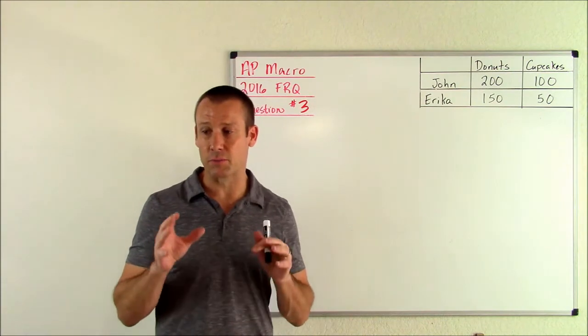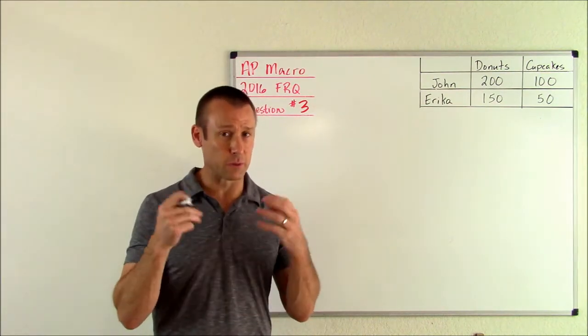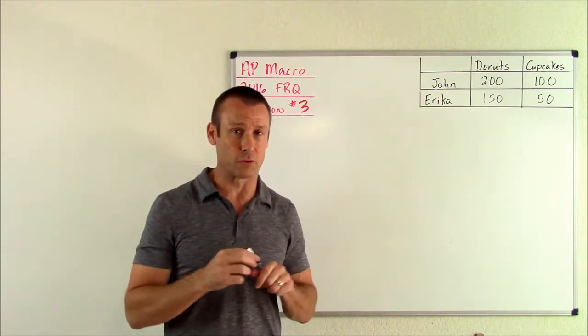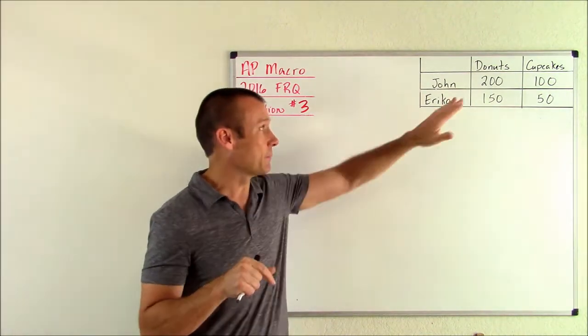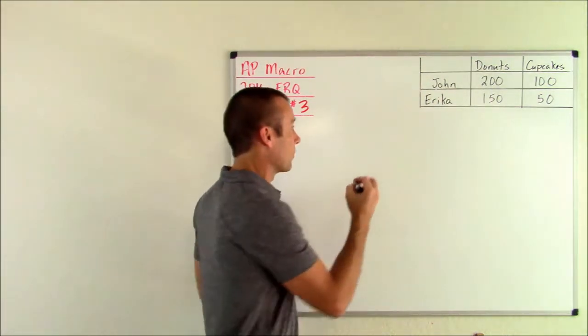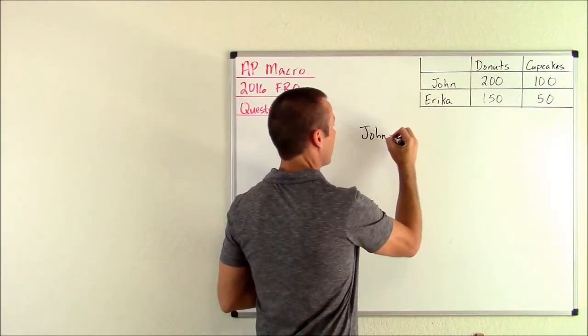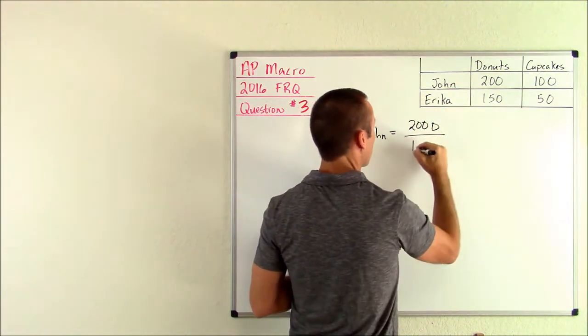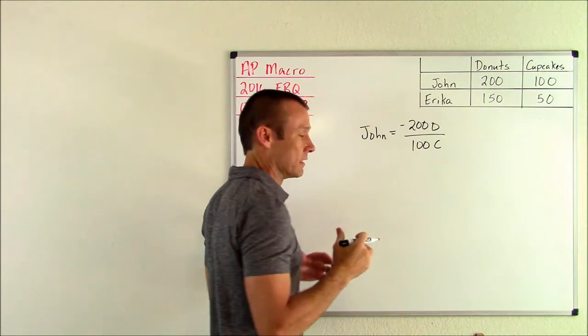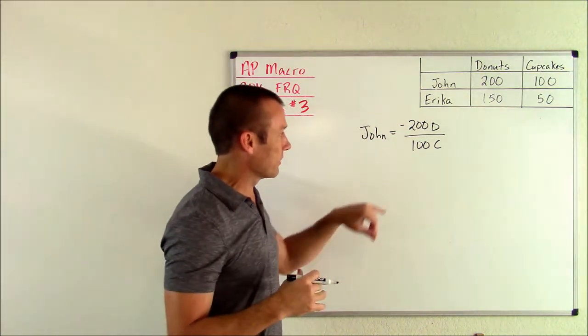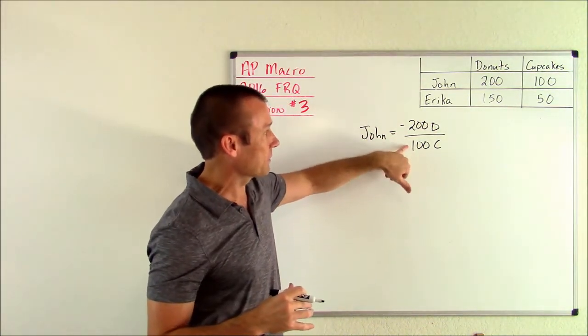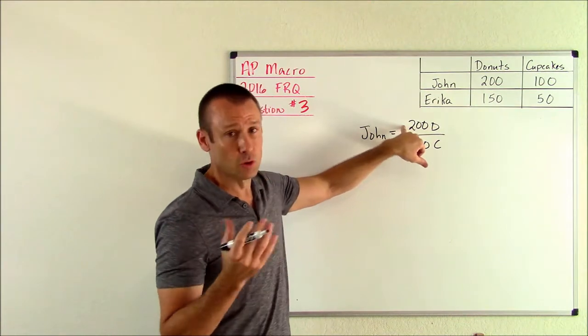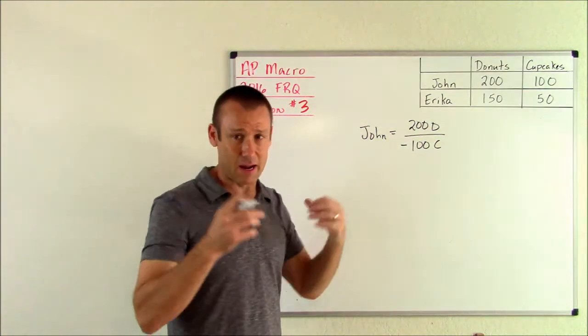Part B: Who has the comparative advantage in producing donuts? Explain. The comparative advantage is based on opportunity cost, who has the lowest opportunity cost. So we need to calculate opportunity cost. The good thing about an output problem is they've pretty much done all the work for us. We think about John here. His opportunity cost is 200 donuts to negative 100 cupcakes. The way I've got it written is when he makes 100 cupcakes, he gives up 200 donuts.